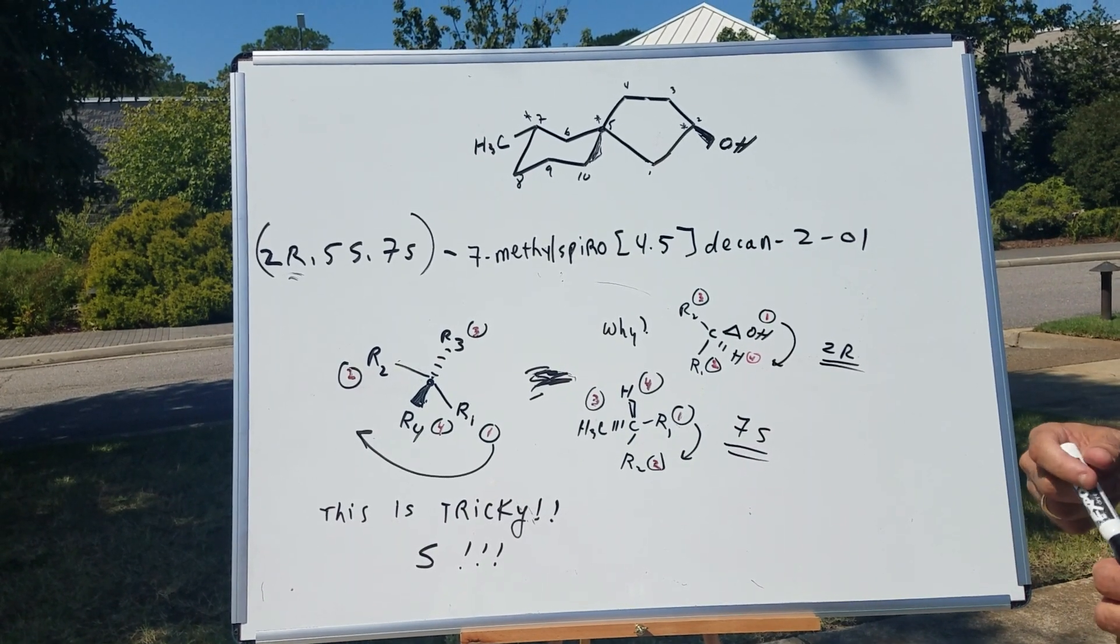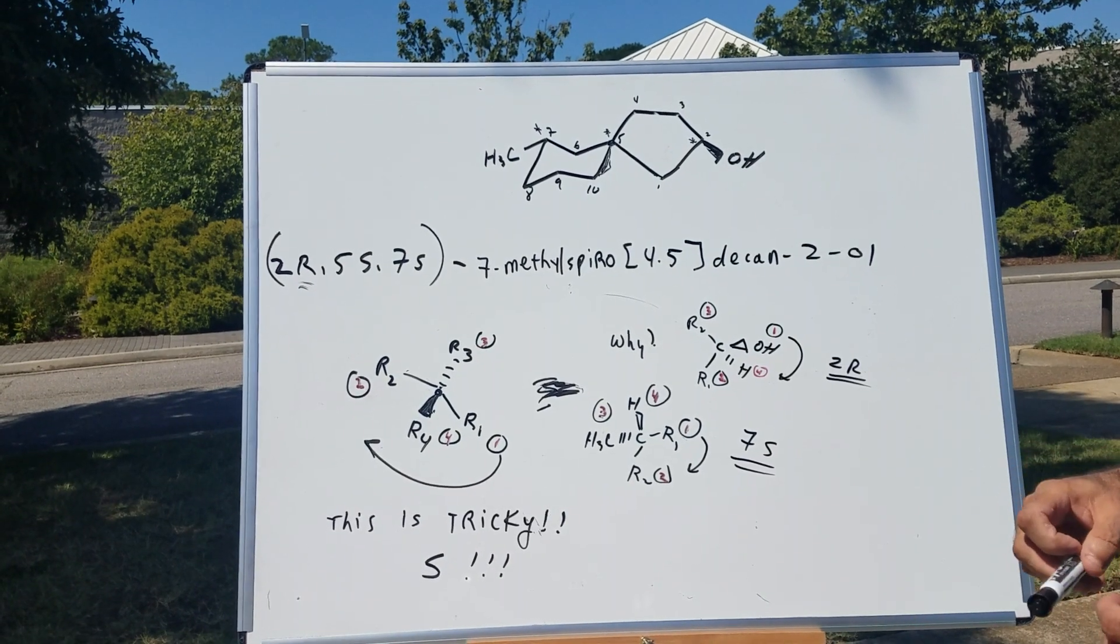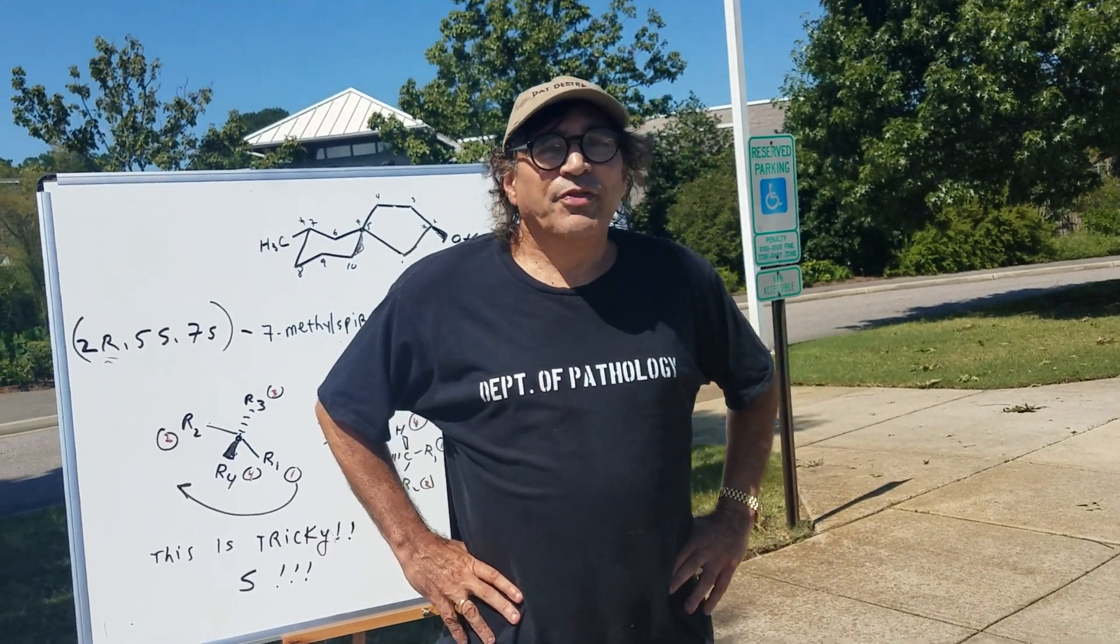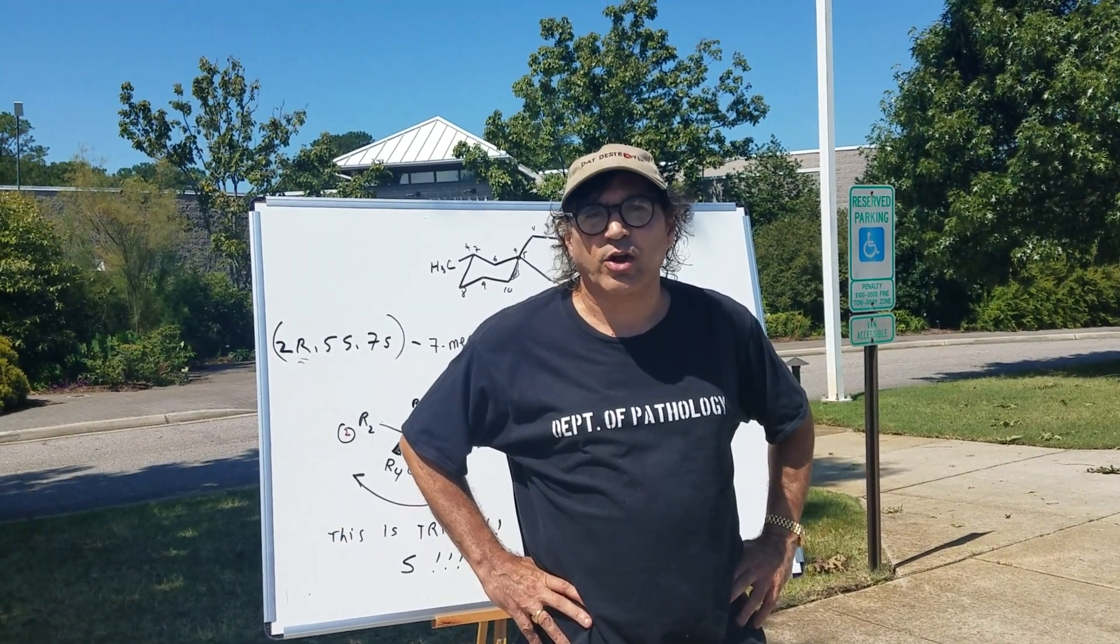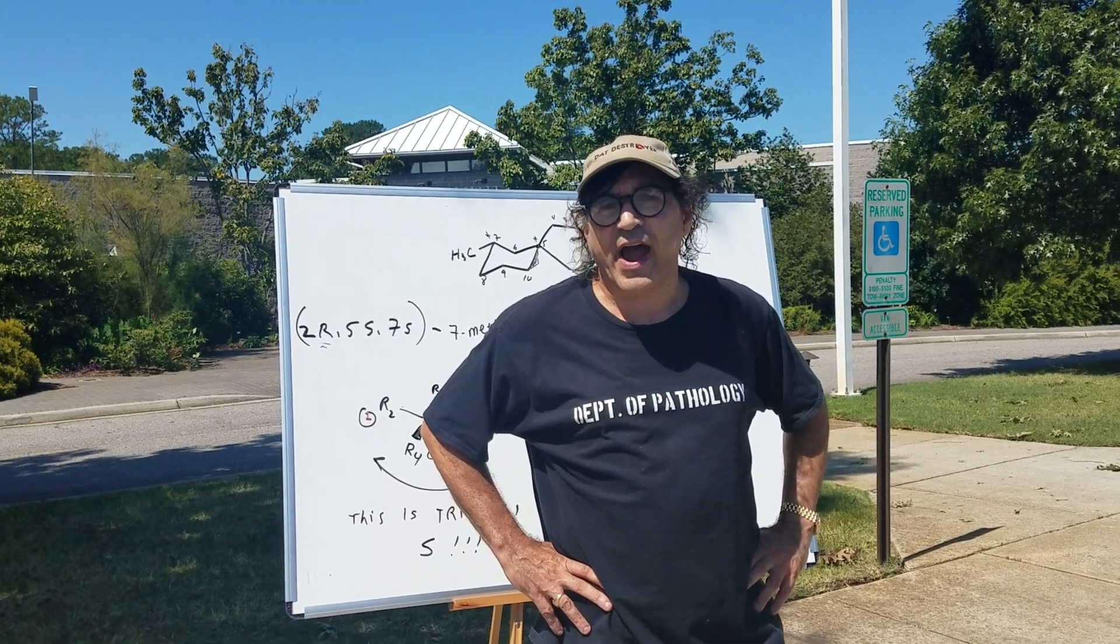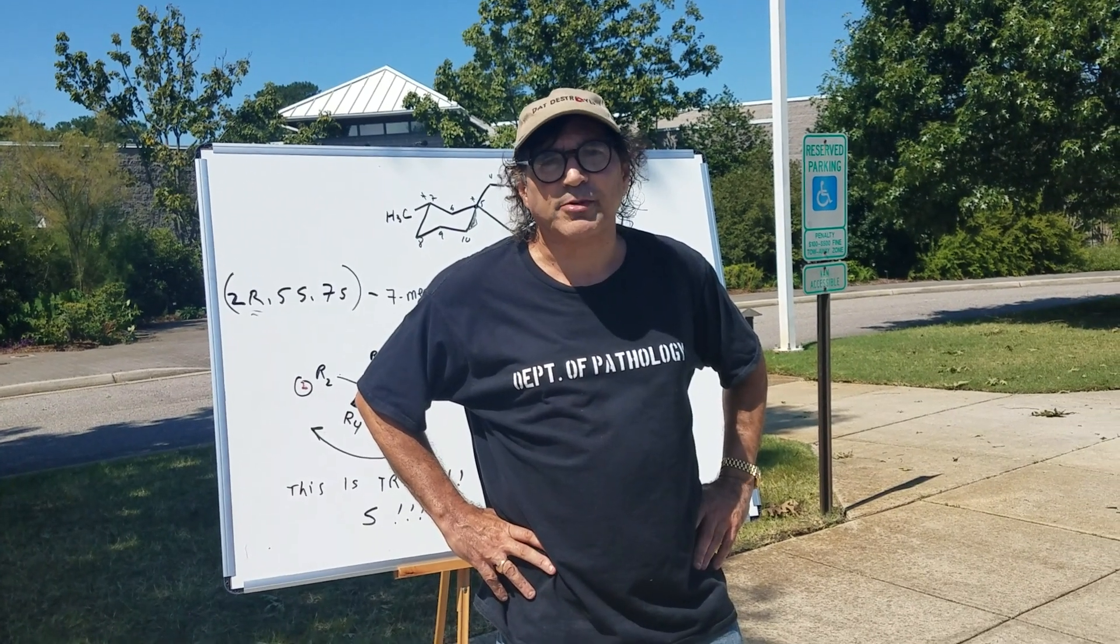So, putting it all together, we get a 2R, 5S, 7S, 7-methyl-spiro-4-5-decan-2-ol. I hope that helps. That is a really challenging problem. And if you want to call it overkill, call it overkill. But for the guys that are going for the 30, it is going to be great practice on going over nomenclature as well as stereochemistry.